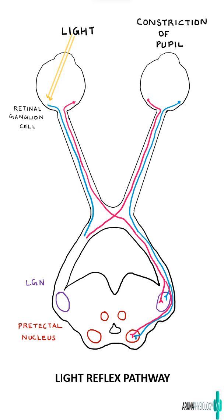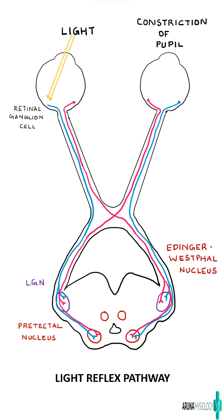The second-order neuron which arises from the pretectal nucleus goes to another important nucleus called the Edinger-Westphal nucleus. So from here, the second-order neuron passes from the pretectal nucleus to the Edinger-Westphal nucleus.